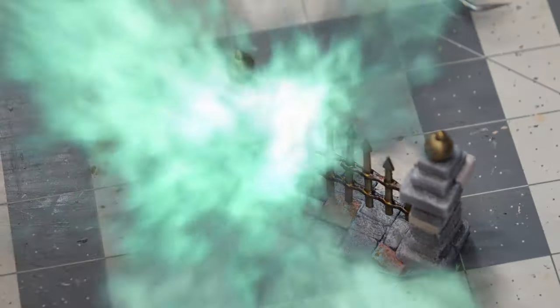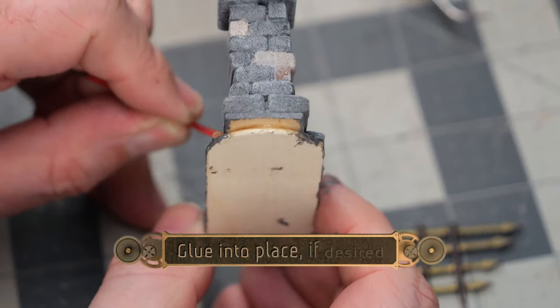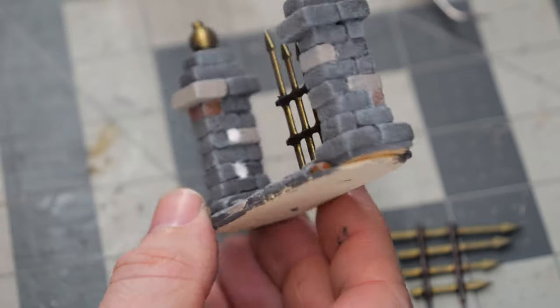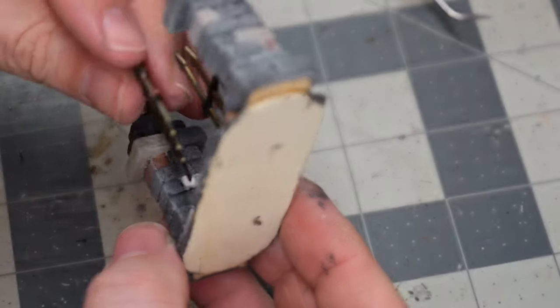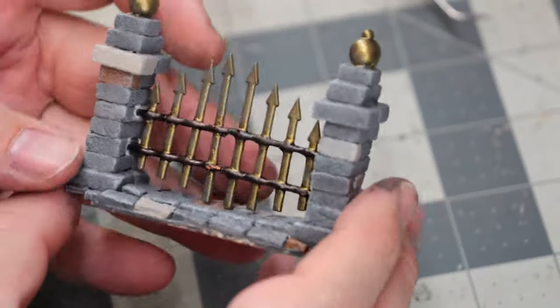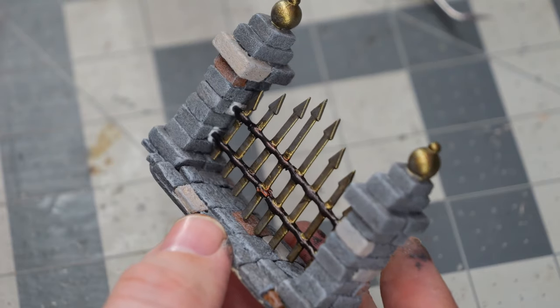This next step is optional. I wanted to glue these in place because I didn't want them coming out, but you can skip this if you want the gate to be removable. That way players can open it and you can remove the piece, making it a more interactive model for the table.